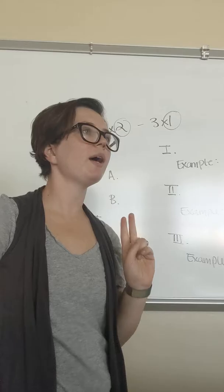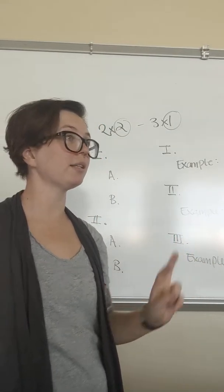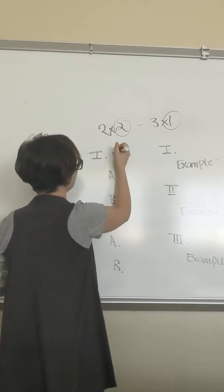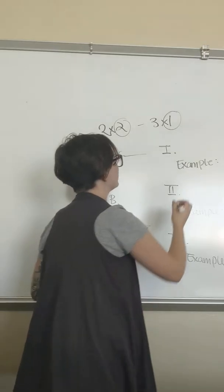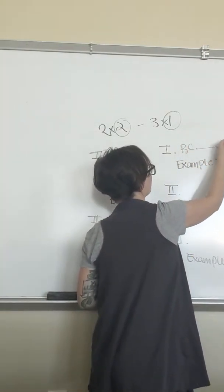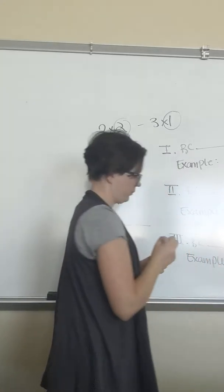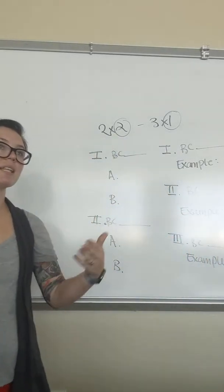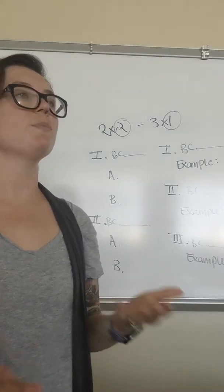In a two by two, you only have to have two arguments, two because statements, right? Because blank. Because blank. In a three by one, you have to have three arguments. That may be slightly harder to think of three arguments instead of two arguments, but there's balance here.